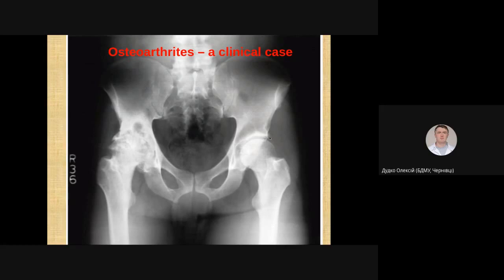Another thing we can see is a dense area of bone tissue on the edge of the acetabulum. This is the subchondral area of the acetabulum, and we are talking about subchondral sclerosis of the upper part of the acetabulum. This also indicates the presence of osteoarthritis — specifically the second, beginning of the third stage of osteoarthritis for the right hip joint.